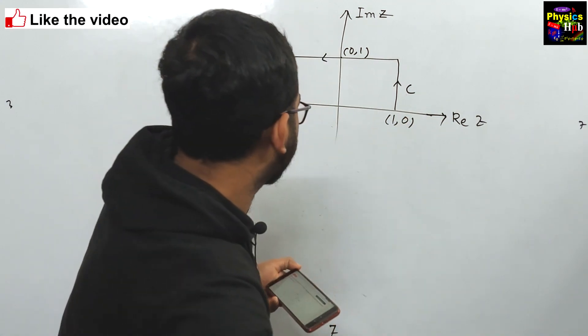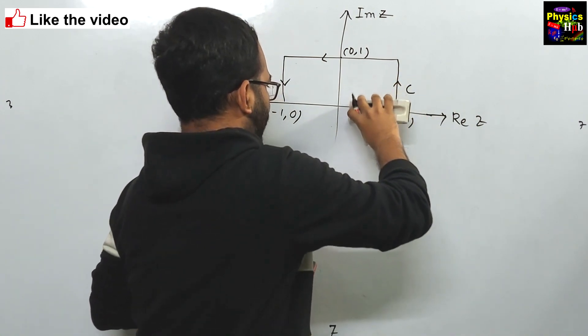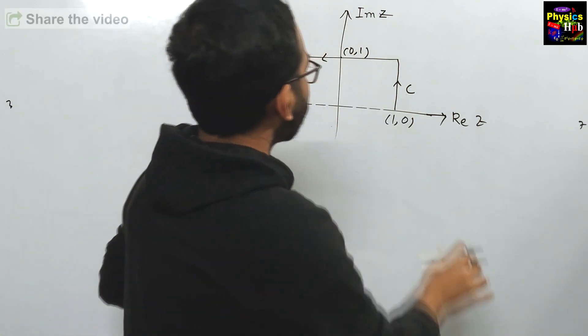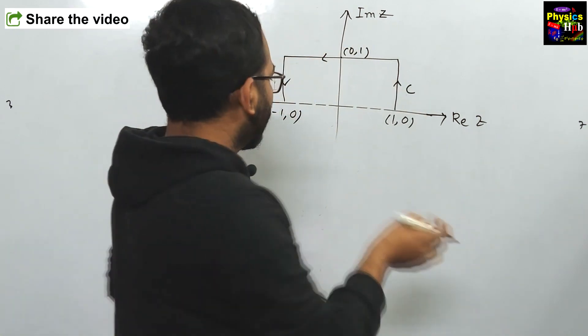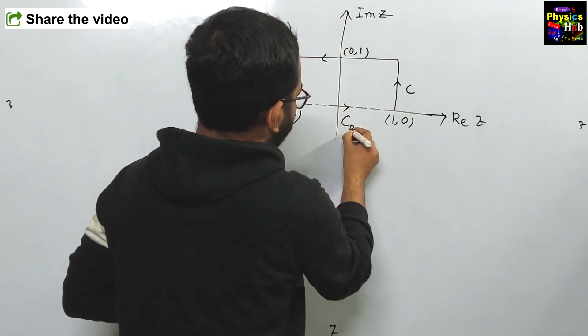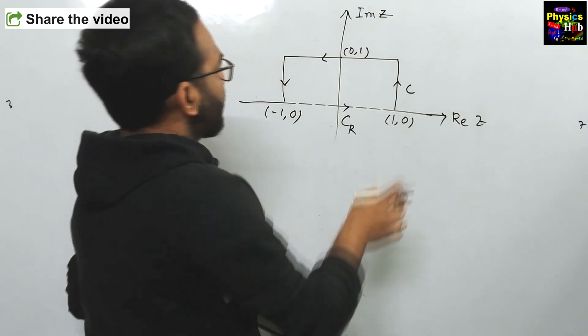You can see the lower portion is dotted dashed. The contour C is only for this solid line. We are calling this portion Cr, so this is the overall contour.